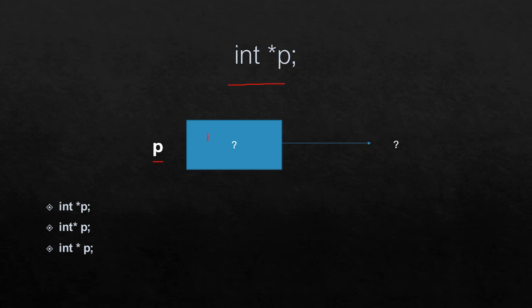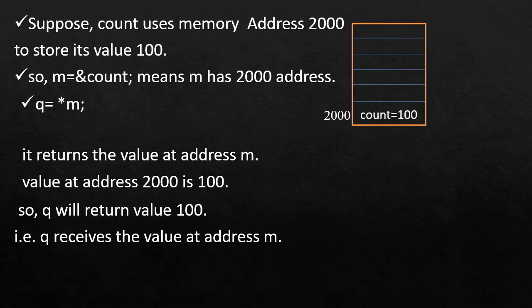int *p means p is an address — suppose 1000 is the address. p points to that memory location and we store an integer value there. *p usage refers to the value at that memory location and is considered a valid memory address usage.